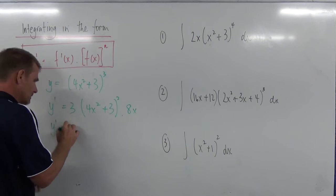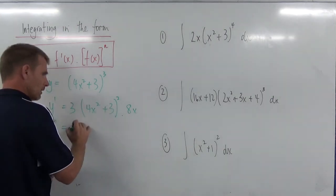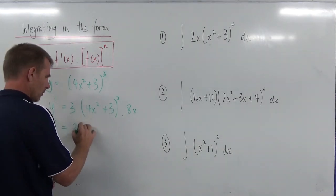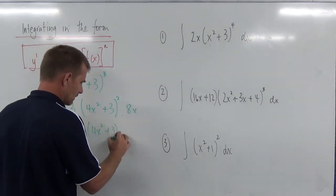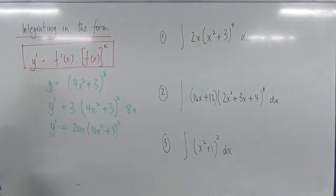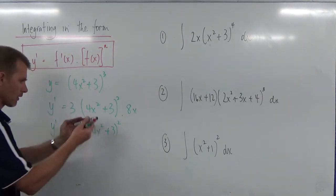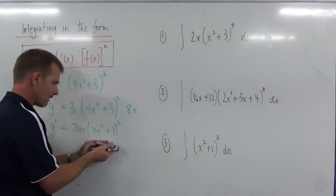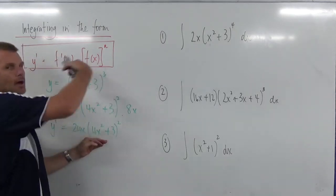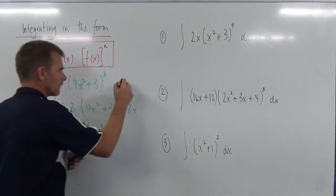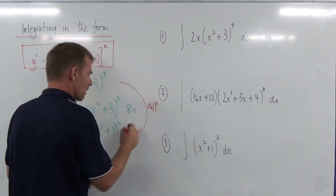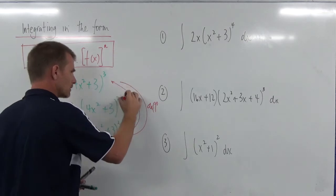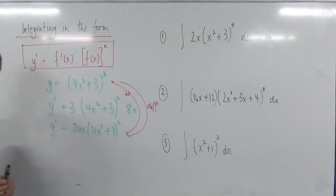We can tidy that up: y dash equals 24x(4x² + 3)². Now this is going forwards. What I want to do is look at this and say how can I make that go the other way — remembering that this is differentiation, but I want to do integration, going the other way.